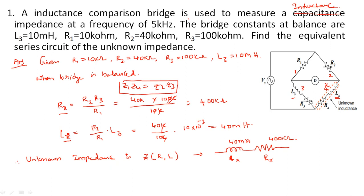You only need to remember one formula: Z1·Z4 = Z2·Z3. If you remember this balanced-condition formula, that is sufficient. By substituting Z1 = R1, Z2 = R2, Z3 = R3 + jωL3, and Z4 = Rx + jωLx, you can derive the specific formulas on the spot in any examination.